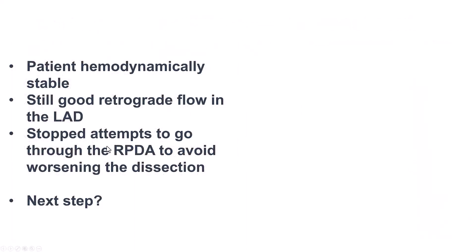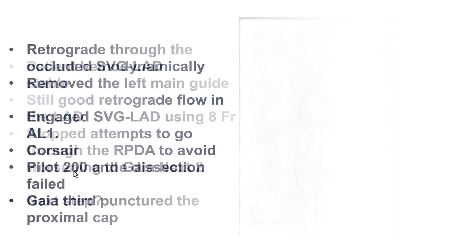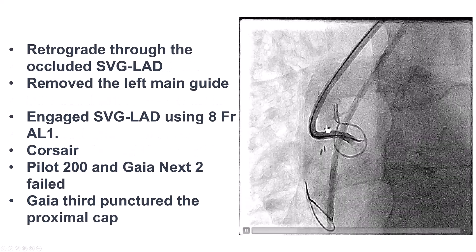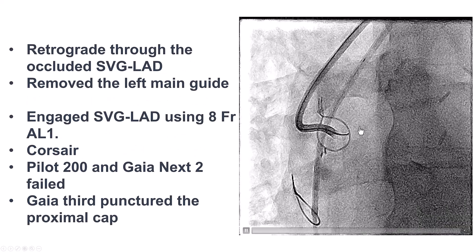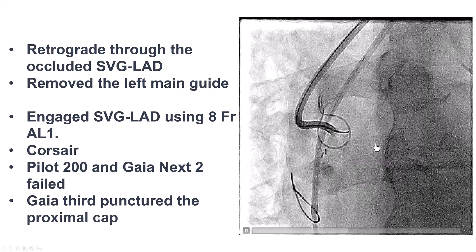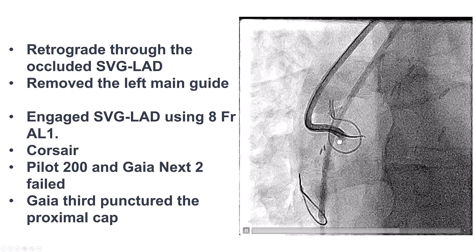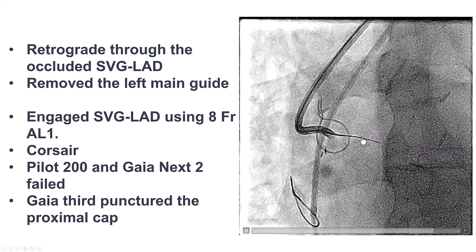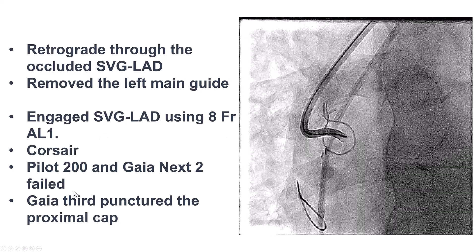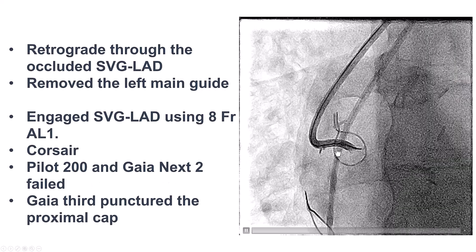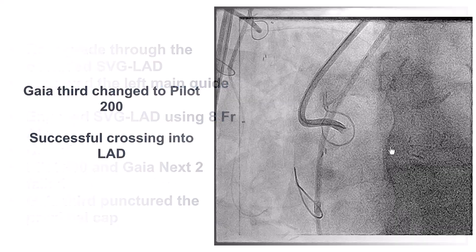The patient was actually stable — no chest pain, no EKG changes. So we decided to change our plan. We thought about the saphenous vein graft that was occluded to the LAD and decided to try to cross through that. We used an AL-1 guide, and then had difficulty penetrating the proximal cap, but eventually used a Gaia 3rd which punctured the proximal cap.